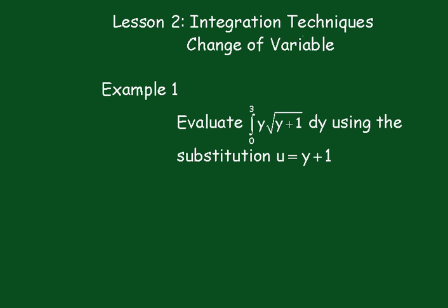Now I'll write out the integral again. So we have i equals the integral from 0 to 3 of y times the square root of y plus 1 dy, and u equals y plus 1.